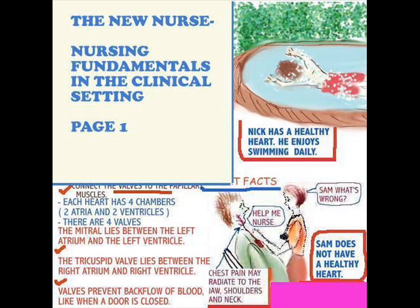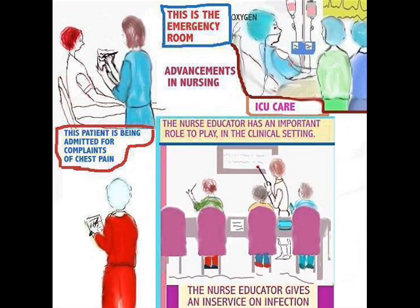Let's first discuss the standards of care, which you'll find in every institution. These are considered advancements in nursing. There must be a standard of care. Every institution has its policies and procedures in place. There are things like infection control, laws like HIPAA, and many other standards that nurses have to follow.